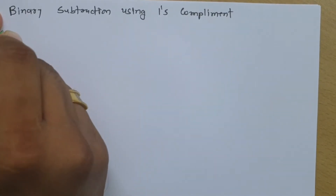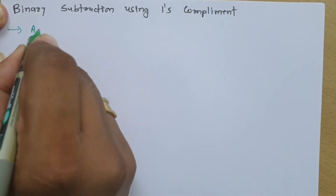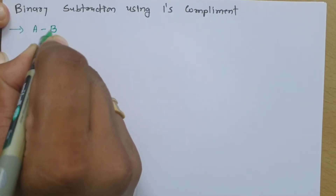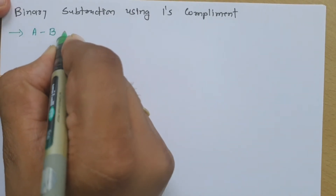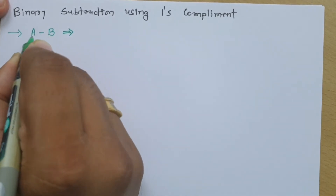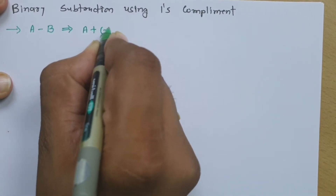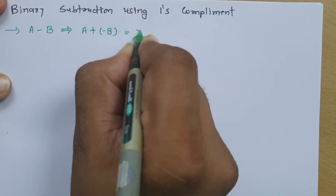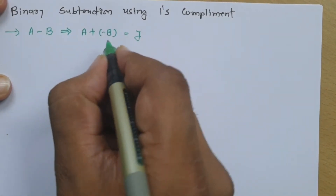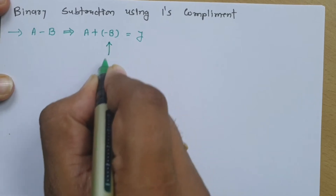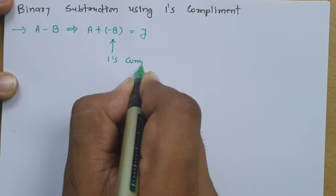If we have a problem where we need to perform A minus B, we will not be subtracting A minus B directly. Instead, we will be doing A plus minus B, and let us say this equals Y. Here, this minus B will be the one's complement of B.